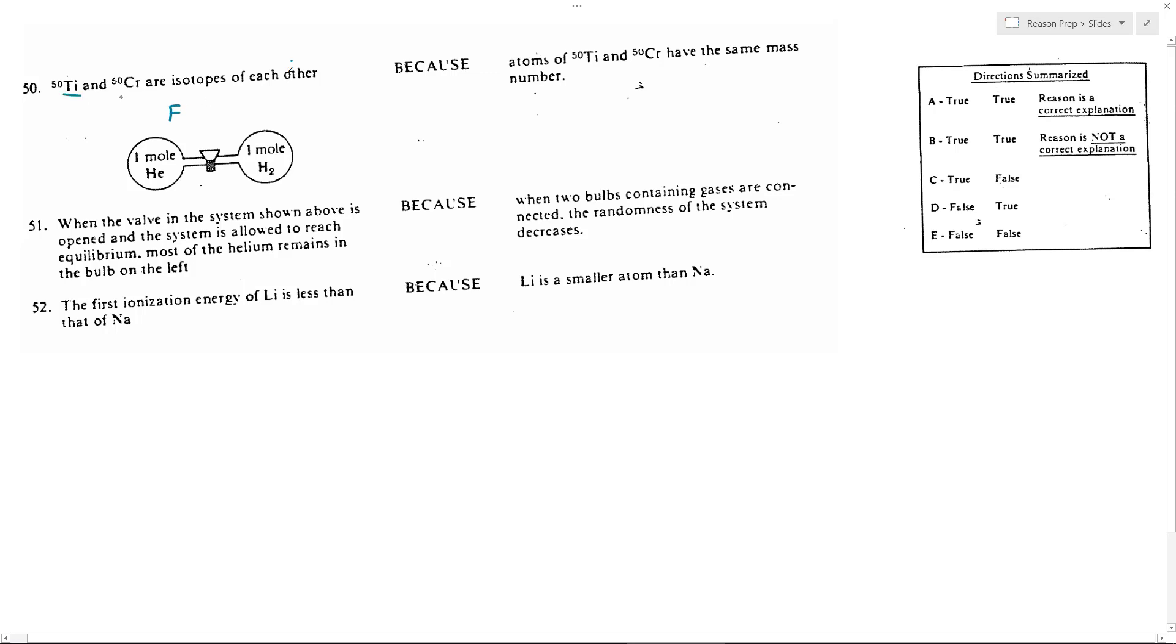Because in order for them to be isotopes, you have to have the same element. Titanium and chromium are different. Titanium is atomic number 22, chromium is atomic number 24.